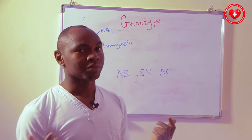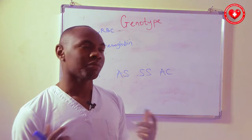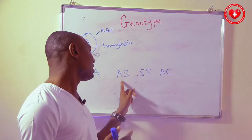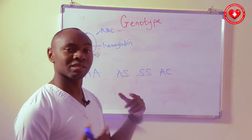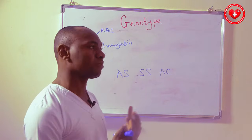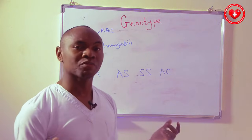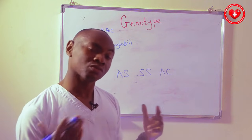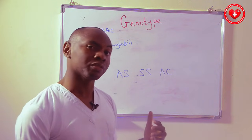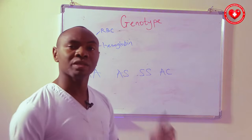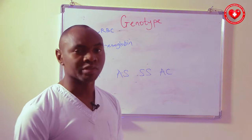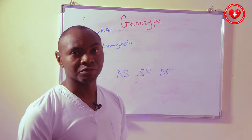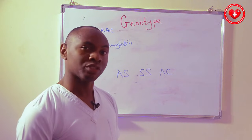Don't just marry anyone. If someone who is AS marries an SS person, there is a 50 to 75% chance that about two or three of their children will have sickle cell anemia. So it's very vital to know your genotype.